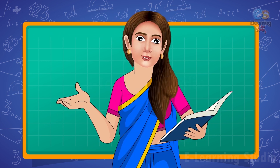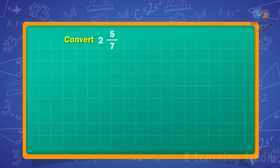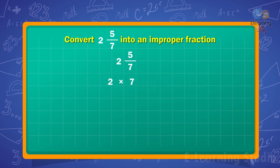And now children, let's see the next example to clear more. Convert 2 and 5 upon 7 into an improper fraction. For this, first we multiply 2, which is the whole number, and 7, which is the denominator.